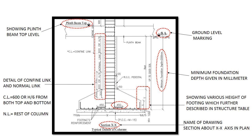Now this is the section XX cut on the typical footing detail plan. This is the typical detail of columns containing all dimensions of columns. The marking of ground level and plinth top level is given in this cross section. The minimum depth of foundation kept on site is given in mm on the right side of the section. The height of footing is given, in which small t shows the height of the rectangular part of footing from the bottom, and capital T shows the overall height of footing measured from the bottom of footing. Details of stirrups are also given in this section.